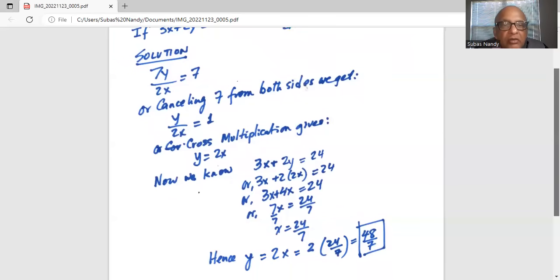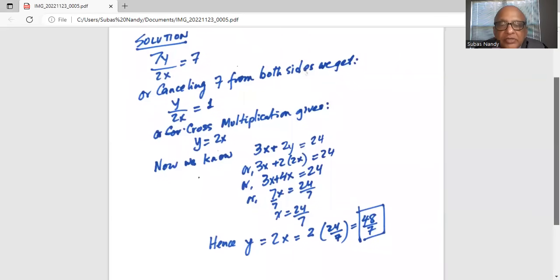OK, so what is y? We know y equals 2x, and y equals 2 times 24 by 7, or 48 by 7.